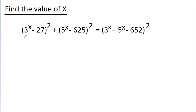In this video, we have given that (3 to the power x minus 27) squared plus (5 to the power x minus 625) squared is equal to (3 to the power x minus 5 to the power x minus 652) squared, and we have to find the value of x.